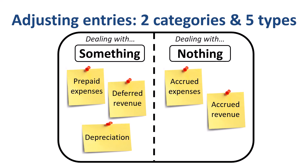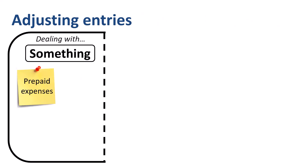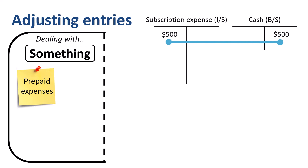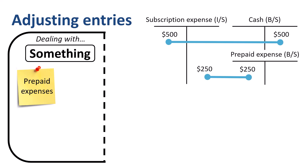Let's go through the adjusting entries for the something category, starting with prepaid expenses. When reviewing the details on the invoice for the newspaper subscription, it turns out that the subscription started in the middle of the year, is paid in advance, and covers 12 months. So half of the amount relates to the current year and the other half to next year. If we left the full amount in expenses for the current year, we would be overstating expenses. We need to move half of the amount to the balance sheet — specifically the prepaid expense asset account — and then next year move the amount from that prepaid expense account into expense.